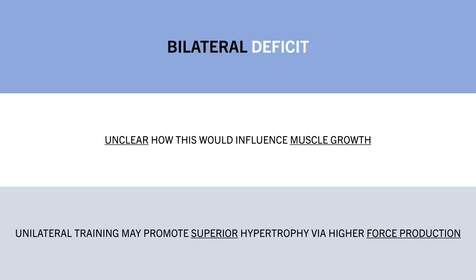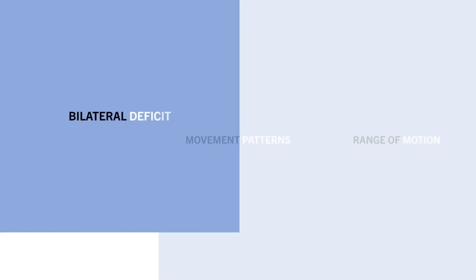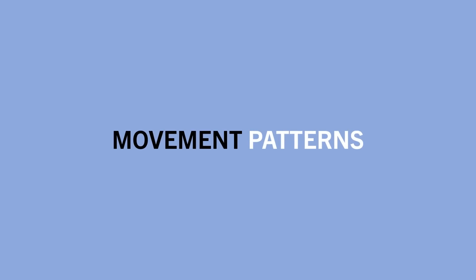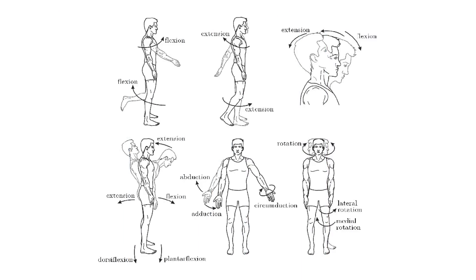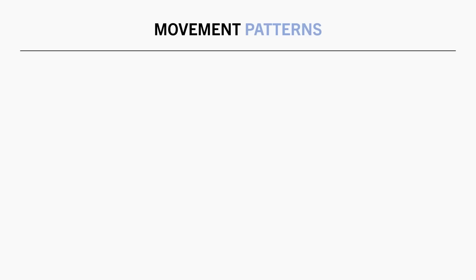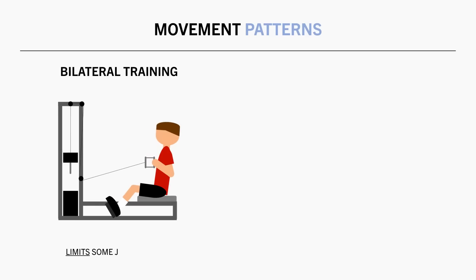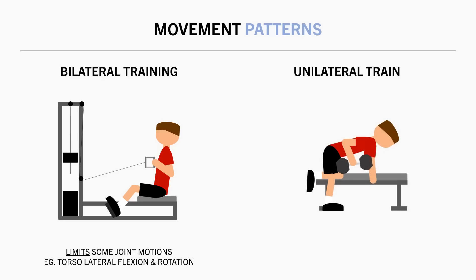Another potential benefit of unilateral training is the ability to perform different movement patterns that cannot be achieved via bilateral training. Each joint can move in different planes of motion allowing us to flex, extend, bend, twist and rotate at different joints. There are endless numbers of ways that we can move our body through space. However bilateral exercises limit the number of motions that each joint can move through. They prevent us from actions like rotating and laterally flexing our torso.